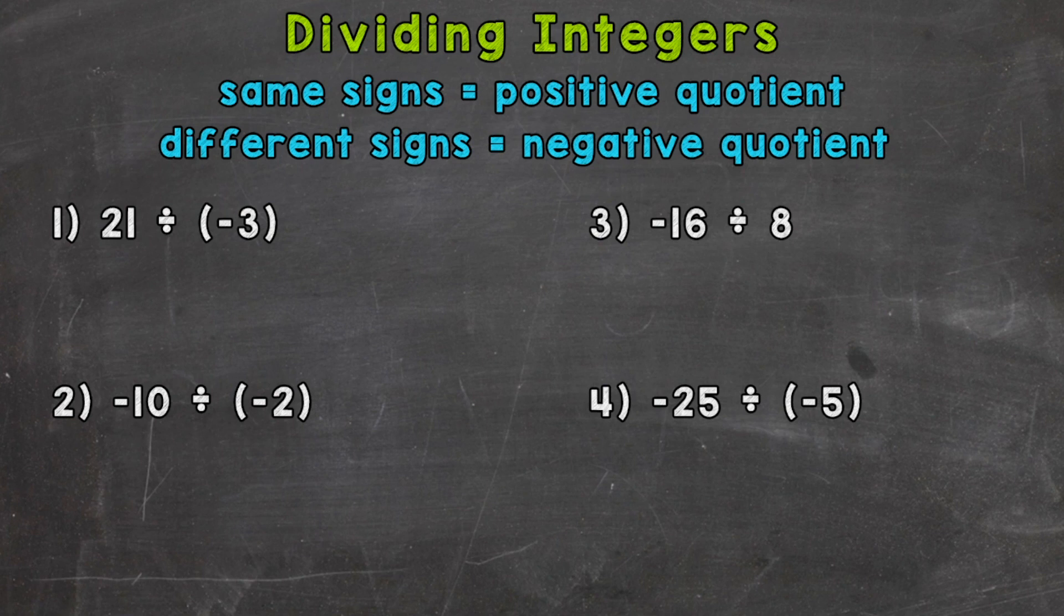So let's do 21 divided by negative 3. We can just think of it as the division fact, 21 divided by 3, which gives us 7. Now, in the case of number 1, we have a positive divided by a negative, so we have different signs. That is going to give us a negative quotient. So our final answer is negative 7.